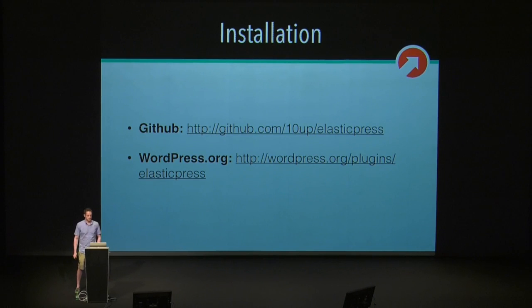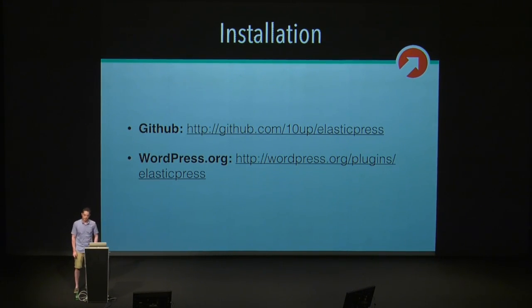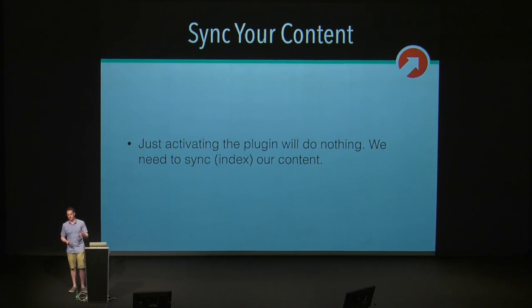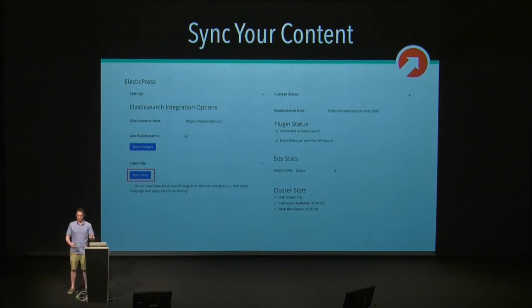ElasticPress requires at least WordPress 3.7 and obviously an instance of Elasticsearch. Installation of ElasticPress itself is very simple — you can clone it off GitHub or grab it off the WordPress.org plugins repository. Once you've activated the ElasticPress plugin in your WordPress dashboard, you get to a settings screen. The first thing you want to do is put in your Elasticsearch host — maybe that's an IP address with a port — then save it. ElasticPress keeps Elasticsearch in sync with your content, so before you can do anything, you have to sync your content to Elasticsearch. You can run an index asynchronously and leave the page without having to worry about it.